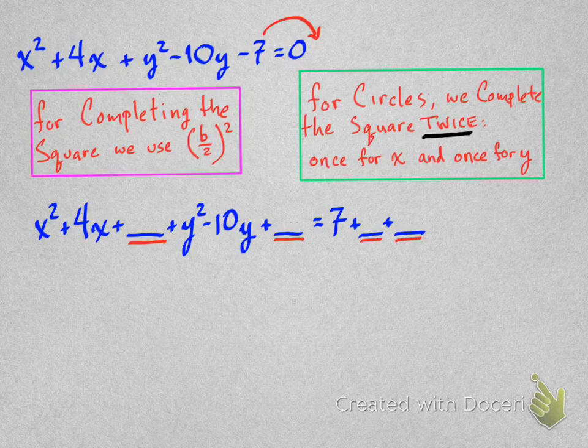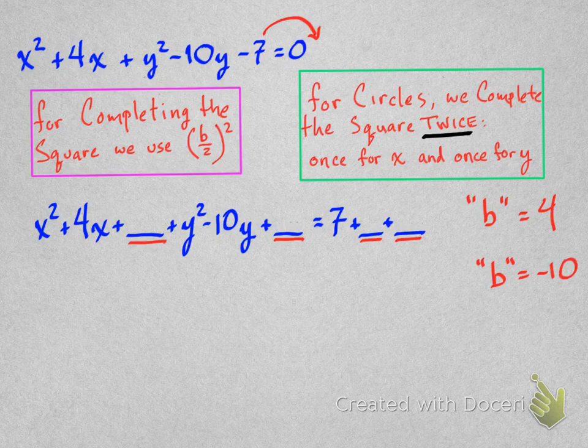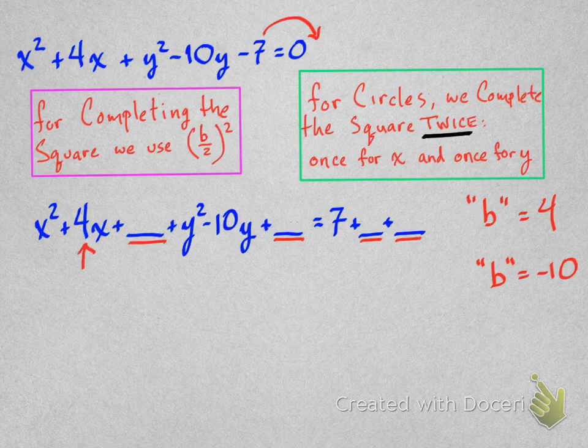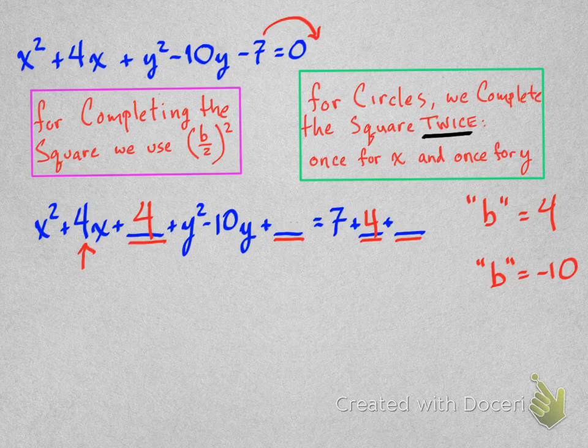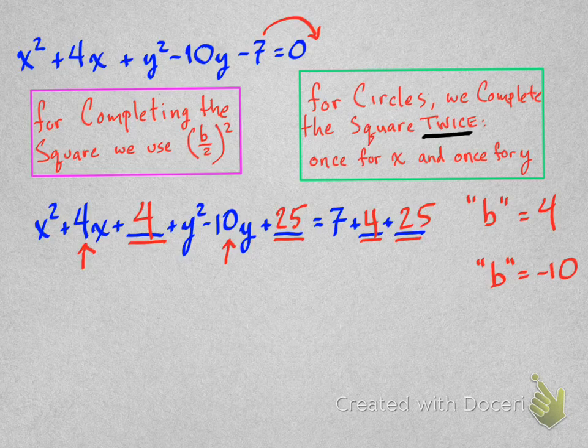Now, because we're going to do this twice, this b number is going to have two values for it. One of them is positive 4. The other one is negative 10. So for the first one, half of 4 squared is also 4. So we're going to add 4 to both sides. And then if you take negative 10, half of that squared is 25. So we're going to add 25 to both sides. Okay, so now we've got all of that stuff in there.